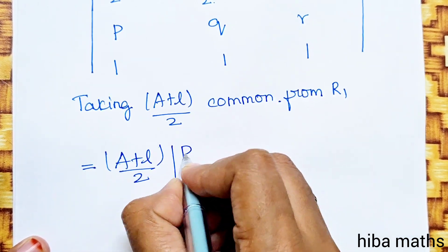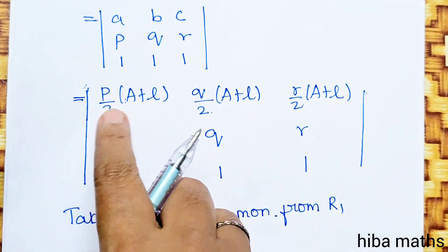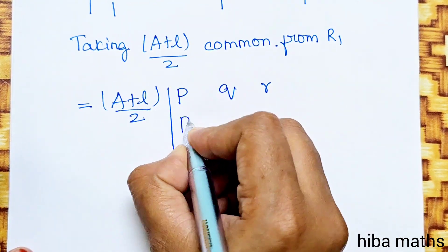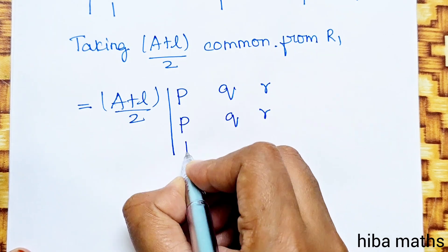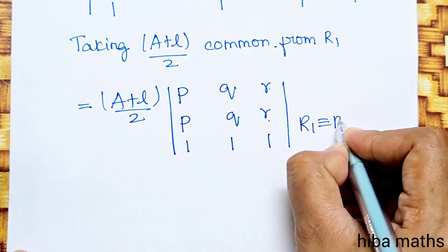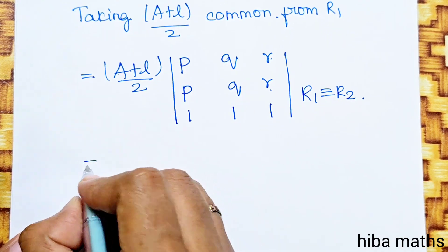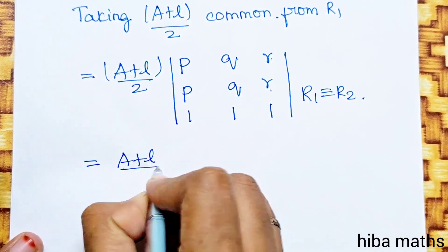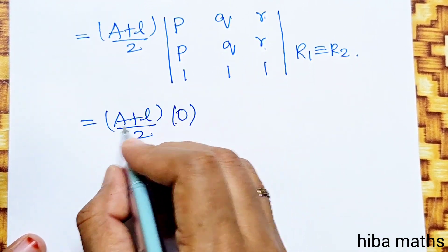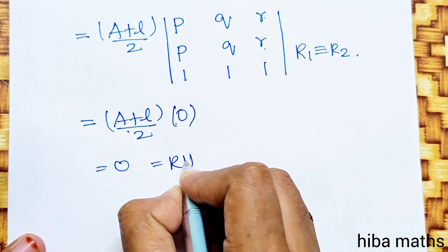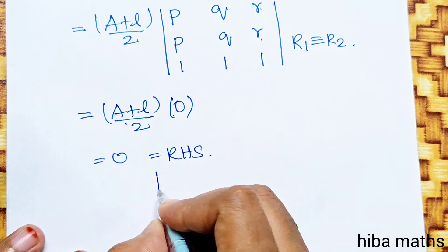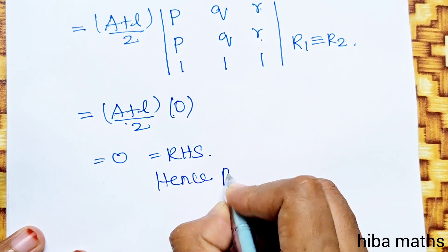The balance remaining is: second row P, Q, R and third row P, Q, R and 1, 1, 1. Since the second row P, Q, R appears twice, the determinant has two identical rows. Therefore (a+l)/2 × 0 = 0. Hence proved. If you have a question, please tell us in the comment section. Thank you so much for watching.